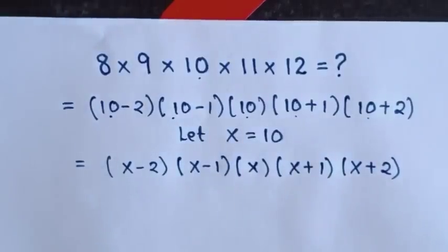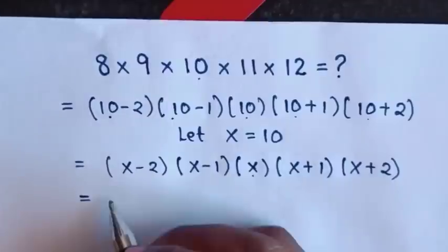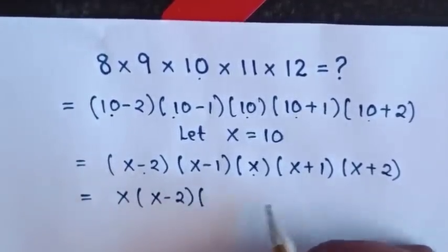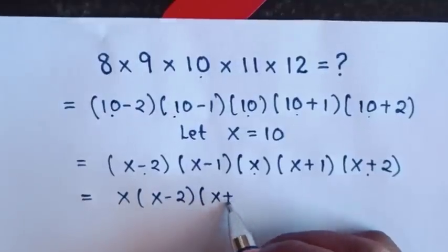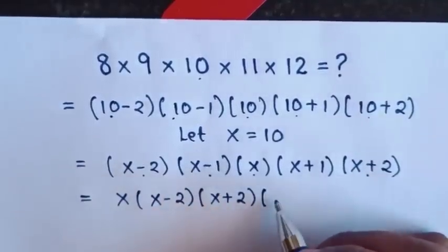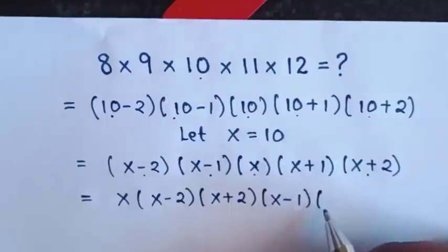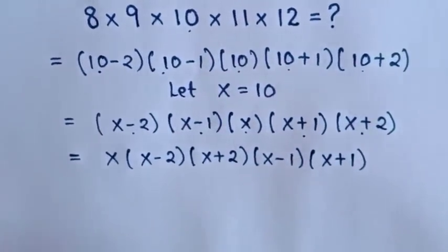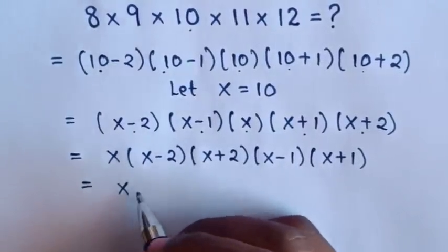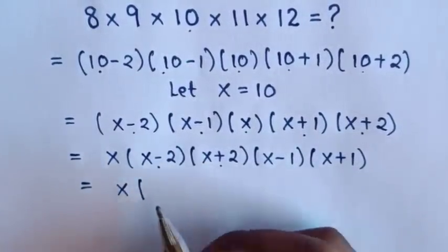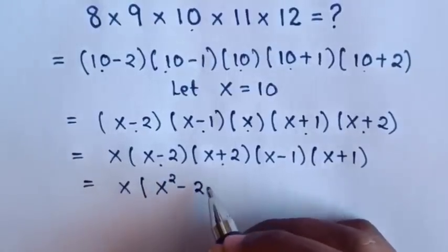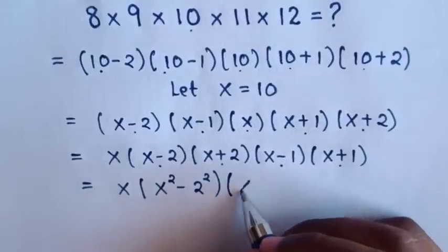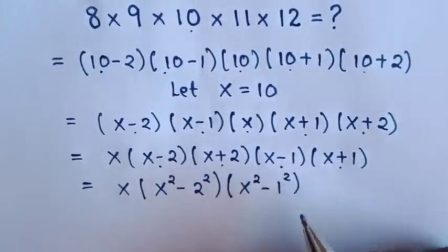Then we rearrange. We start with x, then times (x minus 2) times (x plus 2), then times (x minus 1) times (x plus 1). This time each pair is a difference of squares, so it will be x times (x squared minus 2 squared) times (x squared minus 1 squared).